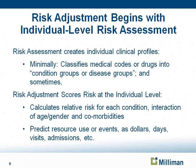Thank you, David. The risk adjustment, as David mentioned, really starts with an individual assessment of risk. That assessment should minimally classify medical codes or drug codes into condition groups or disease groups. Sometimes it uses more than medical codes and drug codes, and that depends upon the risk adjuster that you are selecting. There are a variety of them, and we will discuss that during the presentation.